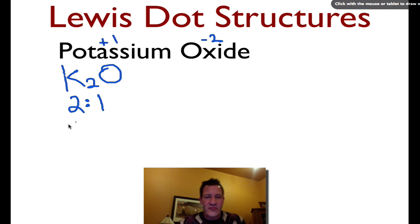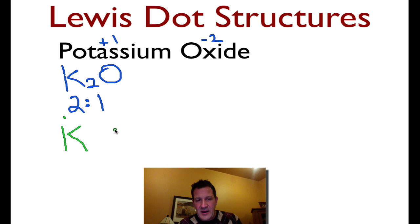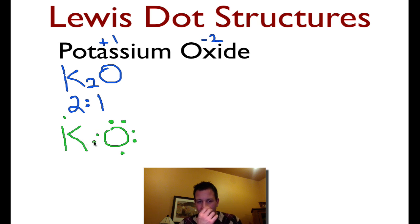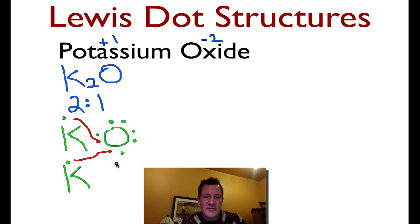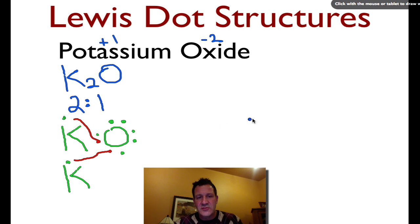I like to also draw the Lewis structures for the individual atoms — I think that helps us to visualize what's going on. Potassium has one valence shell electron. Oxygen, on the other hand, has six — one, two, three, four, five, and then six — and you can see it has two holes, missing one electron here and one electron here. This potassium can fill one of those holes. Since it's K2, we're going to need another potassium with its one valence shell electron to fill that hole. Each valence shell electron comes over to fill its spot, and now potassium has a full outer shell because it's lost its one valence electron, and oxygen has gained two and also has a full outer shell.